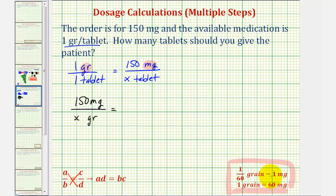One-sixtieth of a grain equals one milligram. If we multiply both sides of this equation by 60, we can say one grain is equal to 60 milligrams. Let's go ahead and use this conversion here.